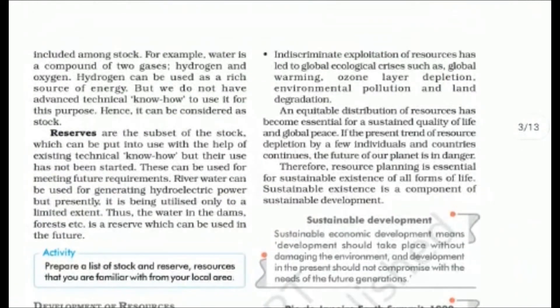Third, indiscriminate exploitation of resources has led to a global ecological crisis — such as global warming, depletion of the ozone layer, environmental pollution, and land degradation. So resources need to be distributed equitably across society, because quality of life and global peace depend on it. If present trends continue, the future of our planet will come into danger.